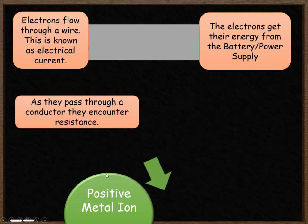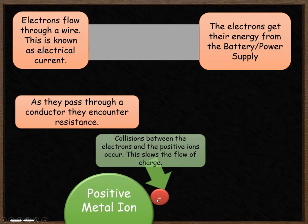Our metal is made up of positive metal ions. As electrons flow through the wire they are going to collide with those positive metal ions, and that slows them down — that's known as resistance. The more collisions that occur between the electrons and the ions, the more resistance there is, the more the charge is slowed down, and the more energy it's going to lose.